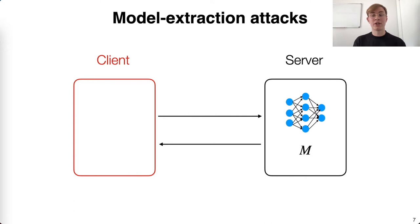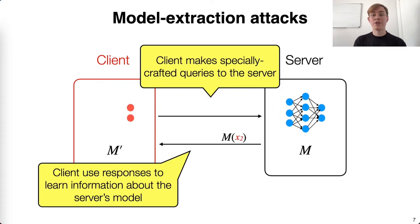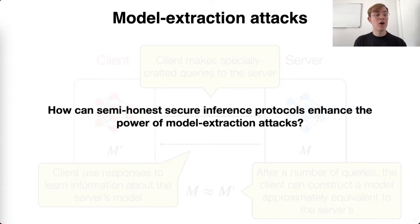Model extraction is a class of attack where a malicious client with black box inference access to a server's model M makes a number of specially crafted queries to the server. The client then uses the server's responses to learn information about the model M, and after a number of queries, the client can construct some network M' which is a close approximation of the server's model. The question we want to answer is: how can semi-honest secure inference protocols enhance the power of such model extraction attacks?